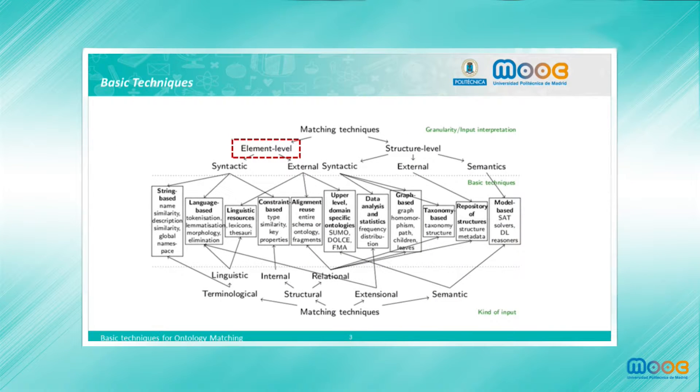So let's now enumerate the main basic techniques that are used for the ontology matching systems. Let's start with the string-based techniques.